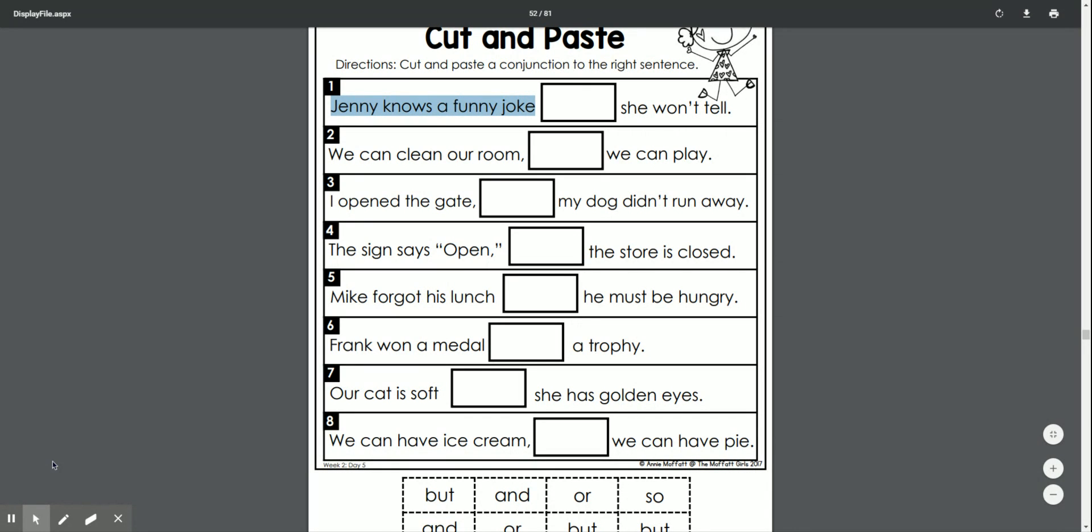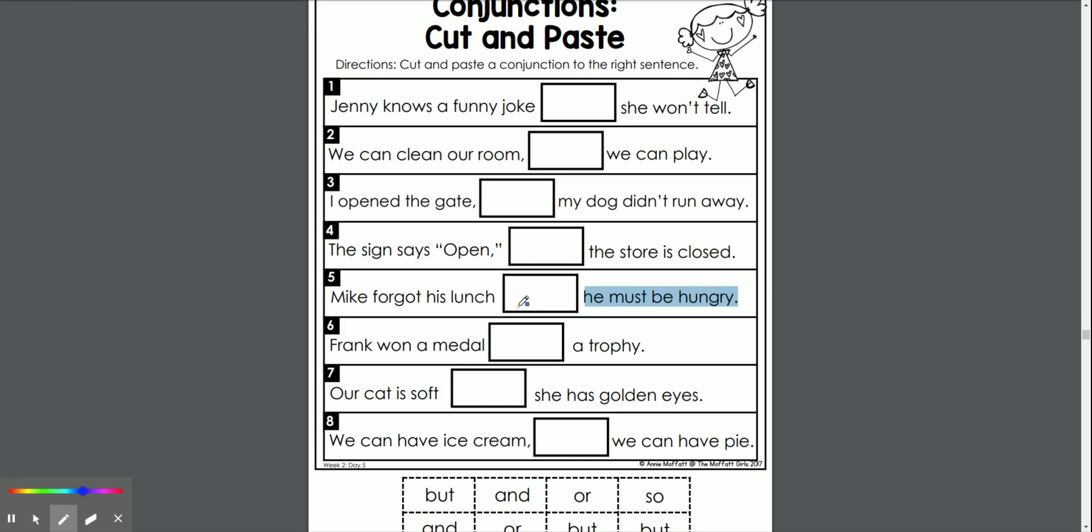So we can look at another one. We could do number five. Mike forgot his lunch, so he must be hungry. So that one I could see a so. We might have to change some of these to take a look at them. If we put so there, Frank won a medal and a trophy. Could do and there.